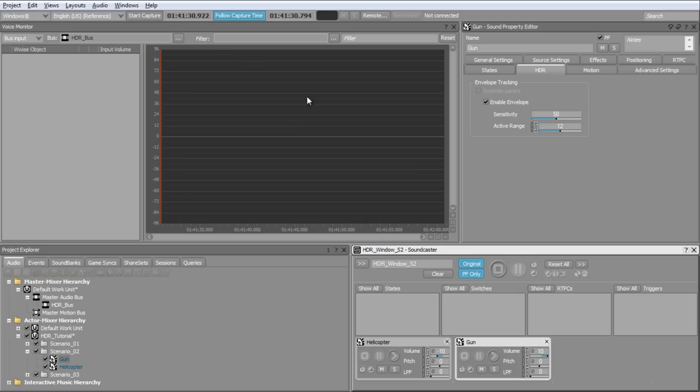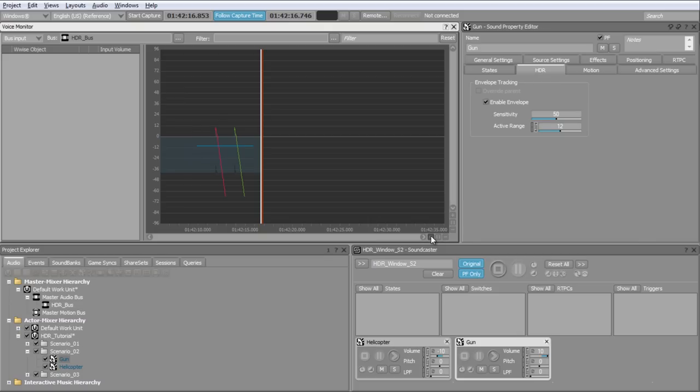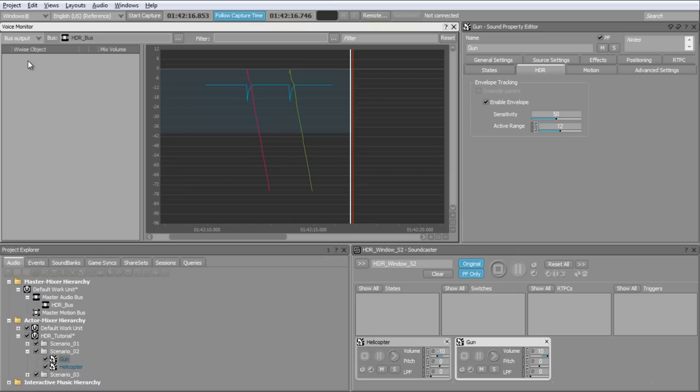Let's listen to the same scenario with the amplitude envelope activated on the gun sound. Clearly, we can see that the volume of the gun sound is not static anymore. We also hear that the helicopter ducking is now transparent.